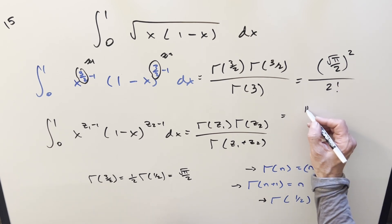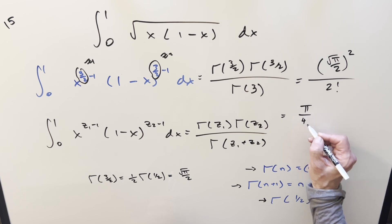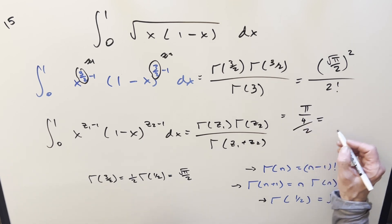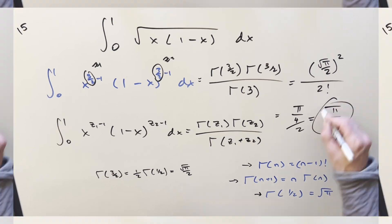But square this out, we just get pi over 4. 2 factorial is just 2, so we divide it into 2. And for my final solution, we just get pi over 8.